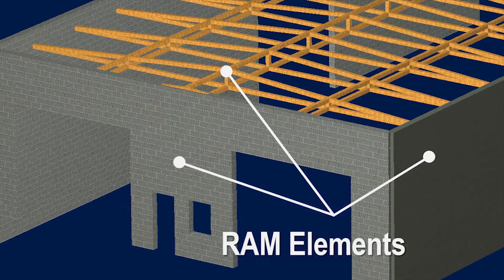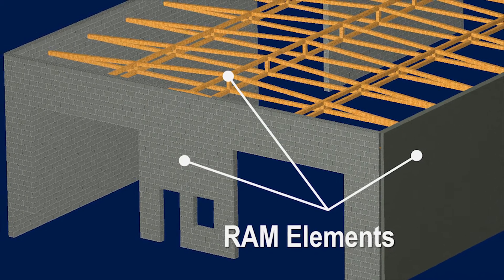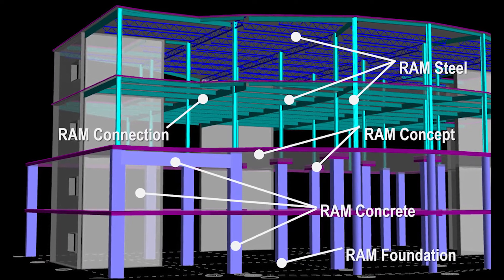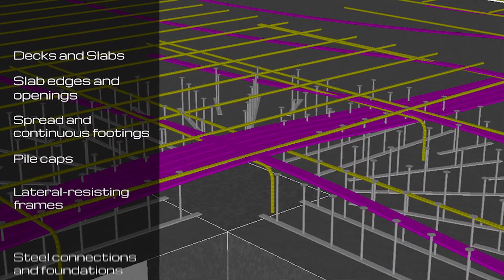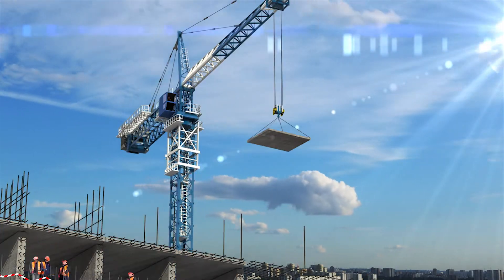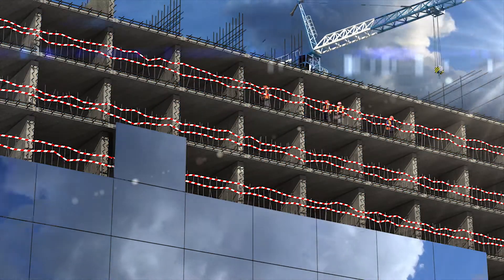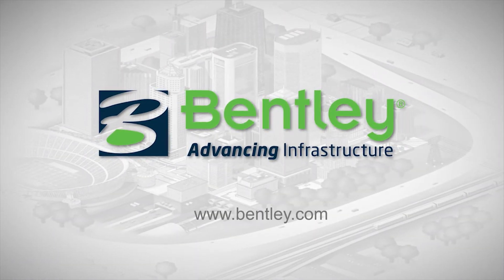You can choose any of our specialized RAM applications suitable to your specific needs. There are applications just for floor design, lateral systems, connections, post-tensioning, foundations, general 3D analysis, and structural components. RAM Structural System is a fully integrated application suite for complete building analysis, design, and documentation for both steel and concrete structures. Imagine the time savings by eliminating tedious, time-consuming tasks with RAM's practical, reliable structural applications. RAM works like an engineer thinks.